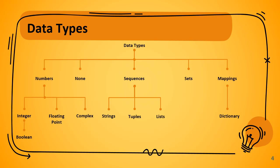Numbers are further categorized into integers, floating point, complex, and boolean values. Sequence data types are categorized into strings, lists, and tuples. Under mappings, the main data type is dictionary.